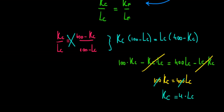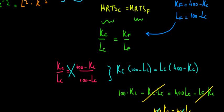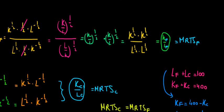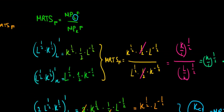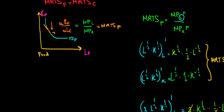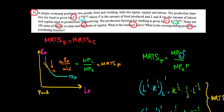K_C = 4·L_C gives us our contract curve. But we still have one more thing to find: the production possibilities frontier, which has a relationship with the contract curve. We will derive the PPF in the next video.